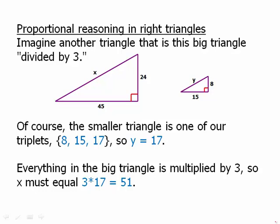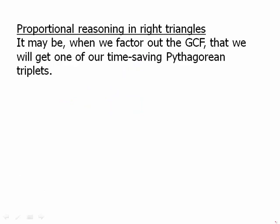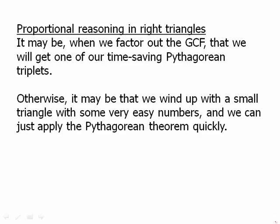That's really important. Basically, almost any time on the test that you're finding yourself dealing with four digit numbers that are not numbers given in the problem, chances are you're making your life much harder than it has to be. It may be that when we factor out the greatest common factor, we will get one of our time-saving Pythagorean triplets. Otherwise, it may be that we just wind up with a small triangle with some very easy numbers, and we can just quickly apply the Pythagorean theorem in that much smaller triangle.